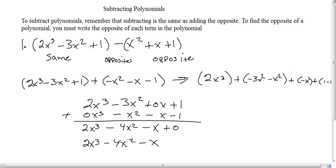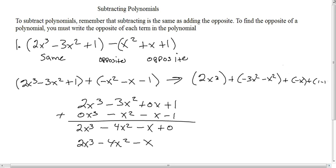That's 1 minus 1. So now we can just combine them. Of course, there's nothing combined with 2x³. Here we have that negative and negative, that's going to give us a negative, a minus 4x². We have nothing to do to go with our x, so minus x.